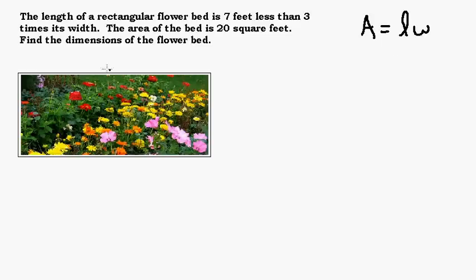Okay, and then they're telling us that the length is 7 feet less than 3 times the width. And we need to piece this all together. And we know that the area is 20, so we know 20 is going to be the length times the width.